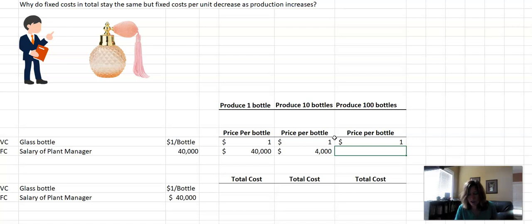And if they produce 100 bottles, we would say that his salary, $40,000 per, which means divide, bottle, there's 100 bottles, would be $400. So the more we produce, the less per unit his salary is.